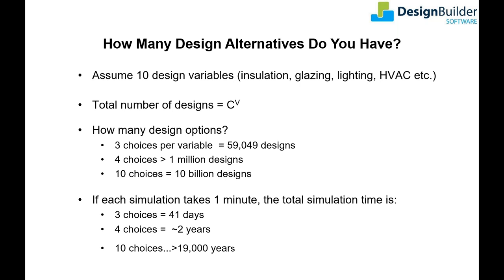Some ECMs, such as the building orientation, may already have been fixed to meet planning authority requirements or permit conditions. The ECMs that are relevant to your assessment — things like glazing, shading, insulation, lighting, and HVAC — are what we'll call your design variables. For each design variable you have a number of choices on the cost versus energy performance spectrum.